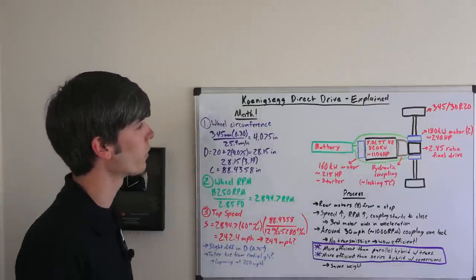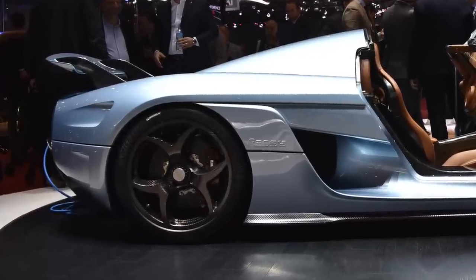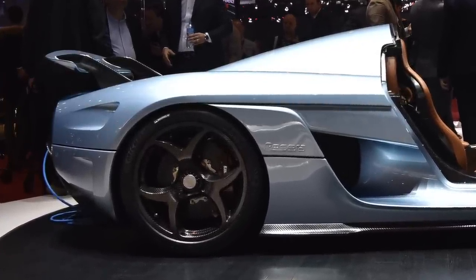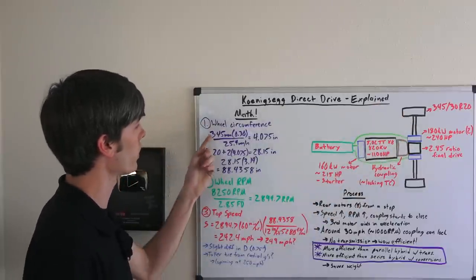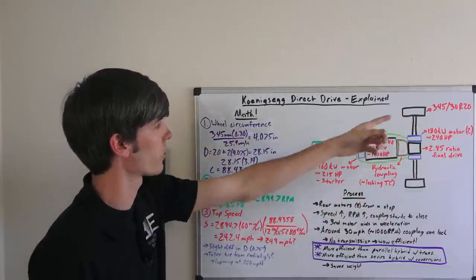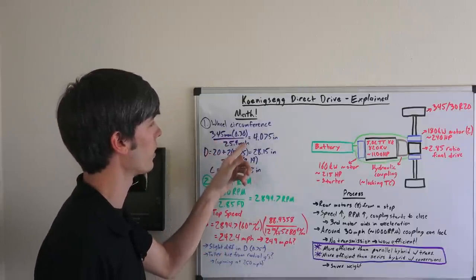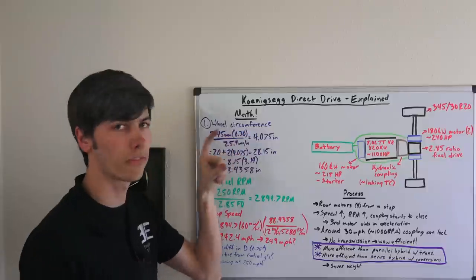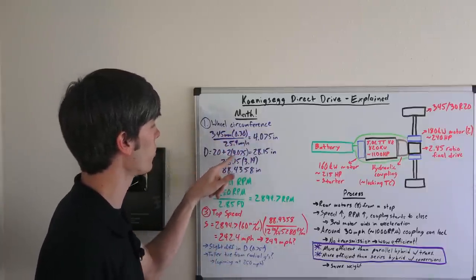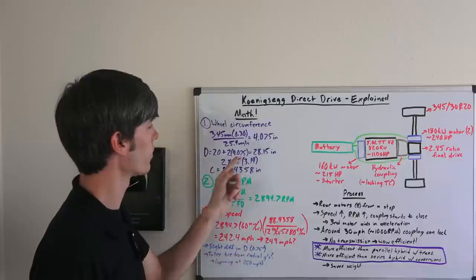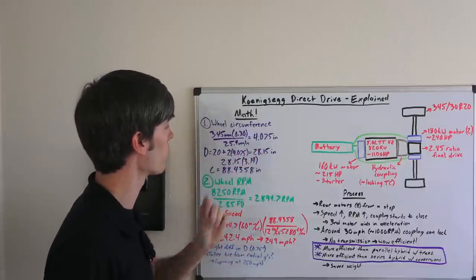So the first thing we need to know is the wheel circumference and I looked at some photos of the car from Geneva. And you could see that the rear tires were 345 over 30 are 20 tires. So if we take 345 millimeters multiply that by the ratio, that's what the 30 represents, and then divide that by 25.4 millimeters in an inch that gives us a profile of 4.075 inches. Now to find our diameter, we've got 20 plus 2 times 4.075 that gives us a wheel diameter and tire diameter of 28.15 inches.